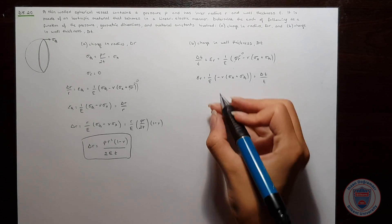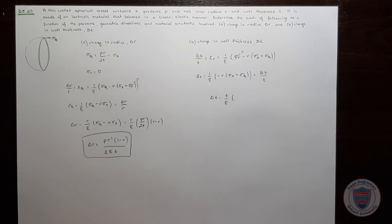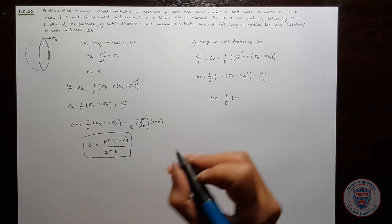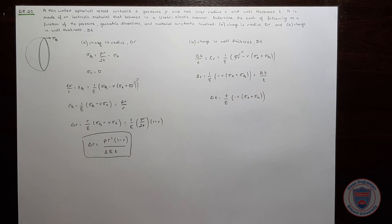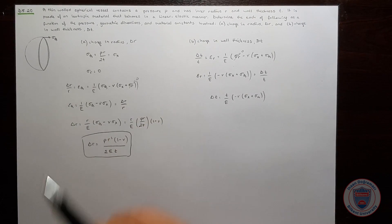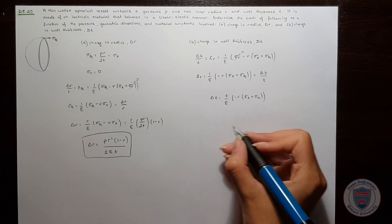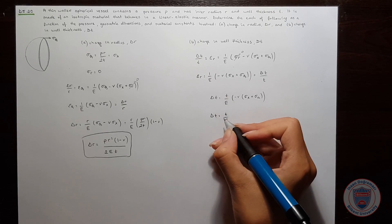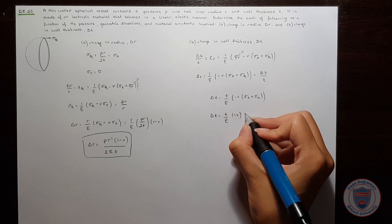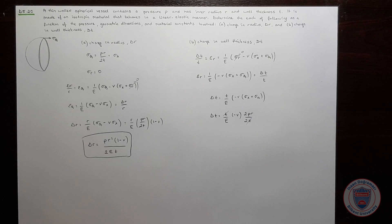Then we get delta T as T over E times minus Poisson's ratio times (sigma x plus sigma theta). We know that sigma x and sigma theta are equal, and again they are equal to PR over 2T. Substituting these in, let's make the simplifications.